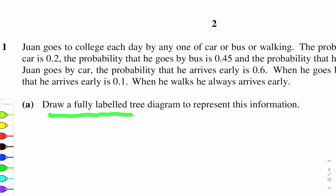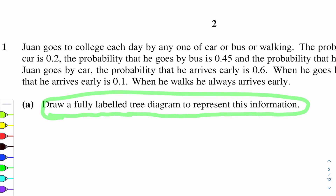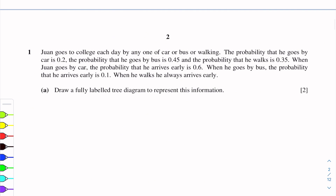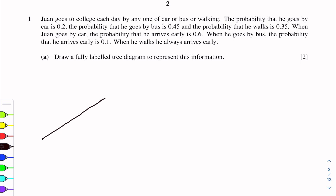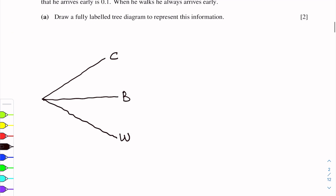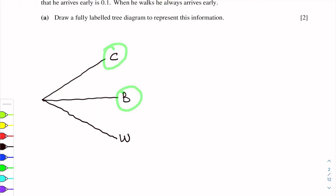Draw a fully labelled tree diagram to represent this information. So we will draw the tree diagram. First, there are three options to go to college, so we draw here three branches: C for car, B for bus, and W for walking.